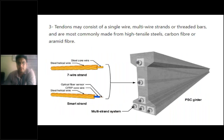You have all seen how a rebar looks like — a circular rod with a threaded or spirally ribbed surface for grip with the concrete. Tendons are different. A tendon is made up of individual wires. Each wire is called a strand — for example, a seven-wire strand. Tendons may consist of a single wire, multi-wire strands, or threaded bars, and are most commonly made of high-tensile steel, HVSD bars, carbon fiber, or aramid fiber rods.